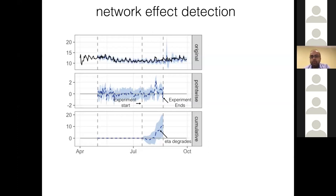These are the reasons we want to detect network effects, and at Uber we can detect them using synthetic control because A/B testing won't work. So we take the entire city — in this case San Francisco — as treatment or control and see if some key business metric is showing deviation from otherwise normal behavior. I'm showing a metric where we start and end an experiment, and you can see the time of arrival slowly starting to degrade during that time — so you want to catch it early and mitigate the problem.